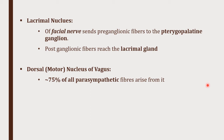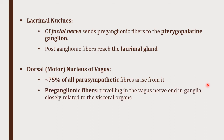Approximately 75 percent of all parasympathetic fibers arise from the vagus nucleus. The preganglionic fibers travel in the vagus nerve and end in ganglia that are closely related to the visceral organs.